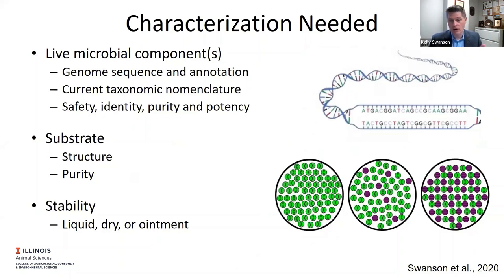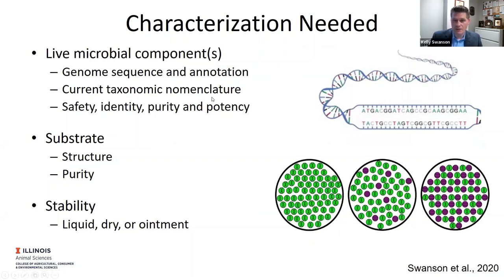When it comes to characterization, this area has really changed over the last couple decades with advancements in molecular biology and sequencing. The standard now is: if you have a live microorganism, you should have the genome sequenced, annotated, and placed into a database using current taxonomic nomenclature. By the genome sequence you can look at genes that might lead to efficacy and a health benefit, or that may affect safety. Safety, identity, purity, and potency should all be defined. For the substrate, the two most important things are structure and purity — if you know the structure, you can predict which microorganisms can utilize it selectively.